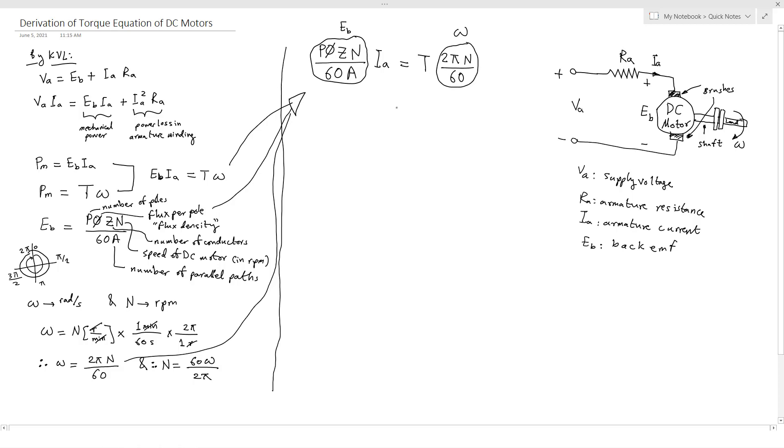What we can do, we can take N with N, also we can take 60 with 60. At the end we can say that torque will equal P Z phi IA over 2 pi A.